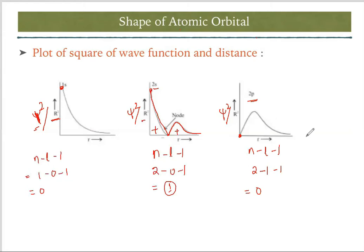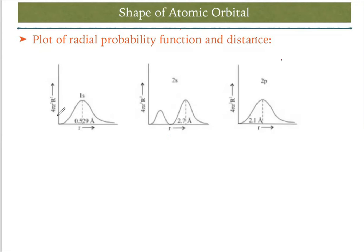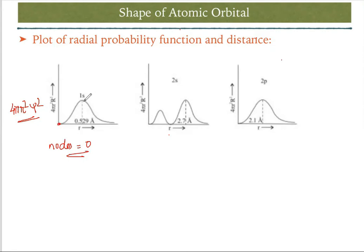Next we draw graphs with 4πr²ψ² on the y-axis. In all three graphs with this function, the graph will be in increasing order. For 1s, there are 0 nodes, and every s or p graph starts from the center. So the 1s graph starts from the center, goes up, won't cut the x-axis, and meets at infinity.